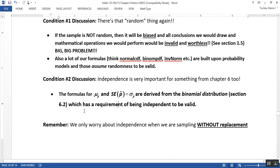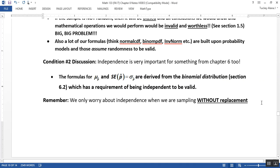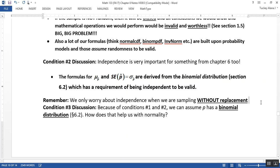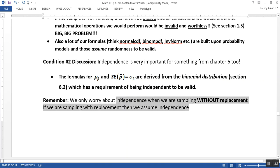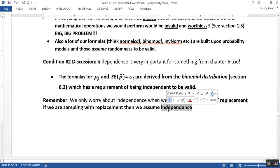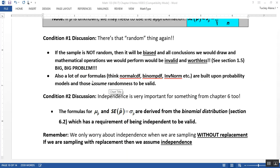Remember though, we only worry about dependence when we have sampling without replacement. If we're sampling with replacement, we automatically assume independence. Dice and coins - you assume those are always independent, which is a pretty safe assumption most of the time, as long as the selection of the sample is random.